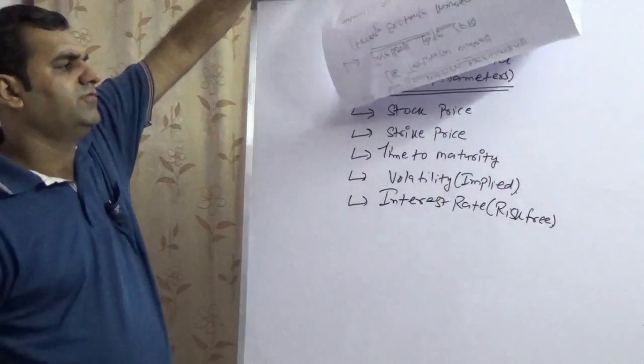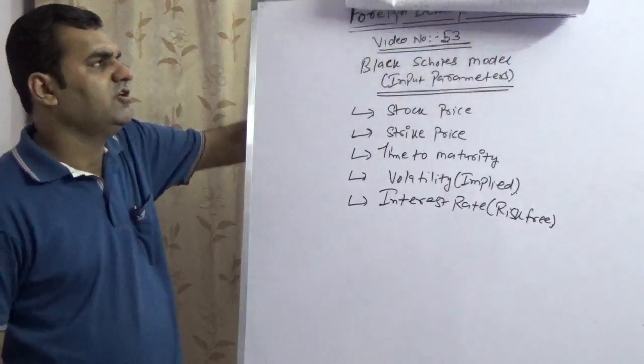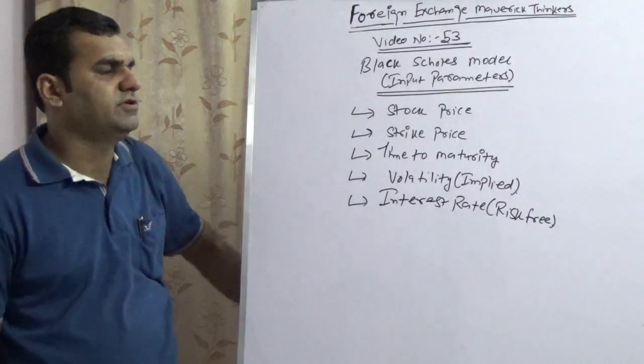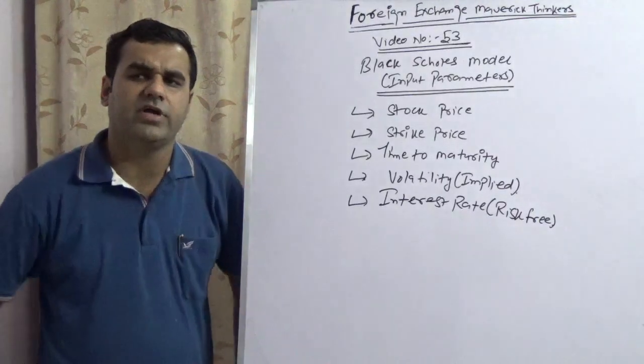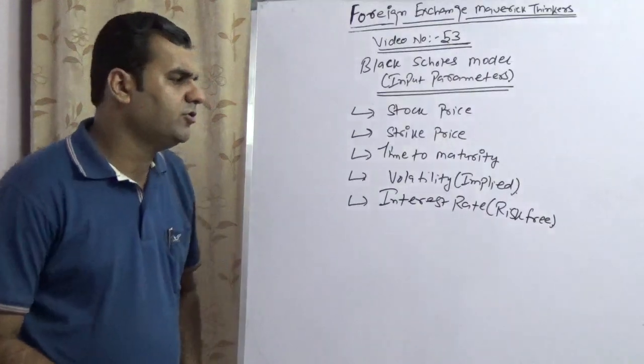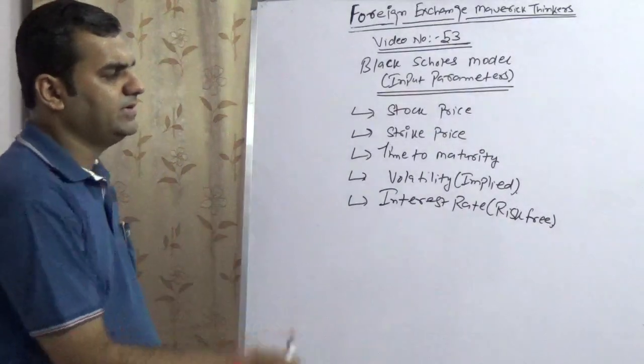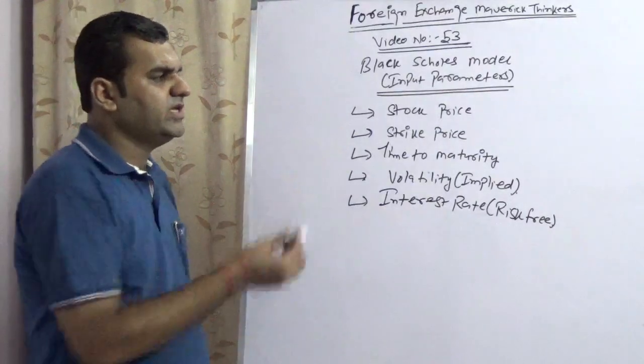Black-Scholes is an option pricing model which calculates the value of both call and put as per respective parameters. For a currency point of view, these are the five important parameters in Black-Scholes.